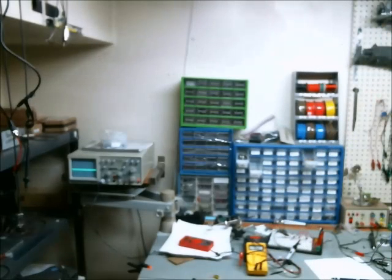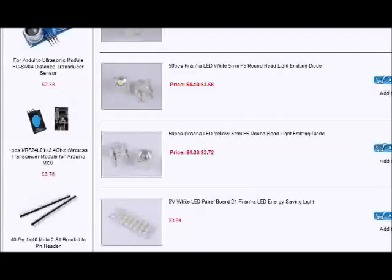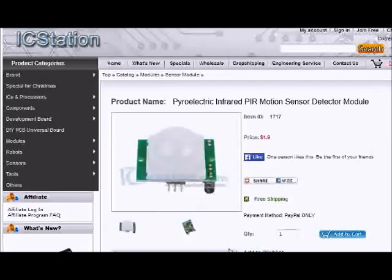So there you go. It detects an increase in ambient temperature. This is the product I got from IC station. Now you can just get the module instead so you won't have to worry about amplifying the signal yourself.